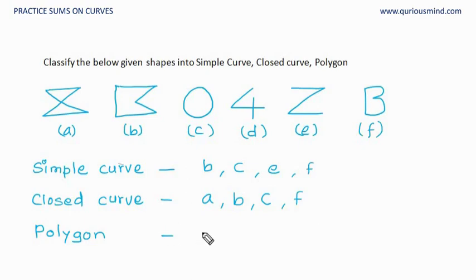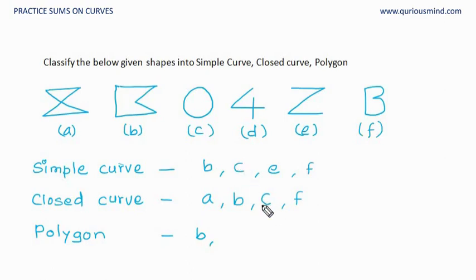Let us look at polygons. A polygon is a simple closed curve entirely made up of line segments — so it has to be both simple and closed. A is closed but A is not simple because it crosses over, so A is not a polygon. B is simple as well as closed and it is made up of line segments only, so B is a polygon. C is both simple and closed but it is not made up of line segments, so C is not a polygon. D is not a curve, so we skip it. E is a simple curve but not a closed curve, so we skip it. F is a simple closed curve, but it has curves which are not line segments, so it is not a polygon. So only B out of these is a polygon.